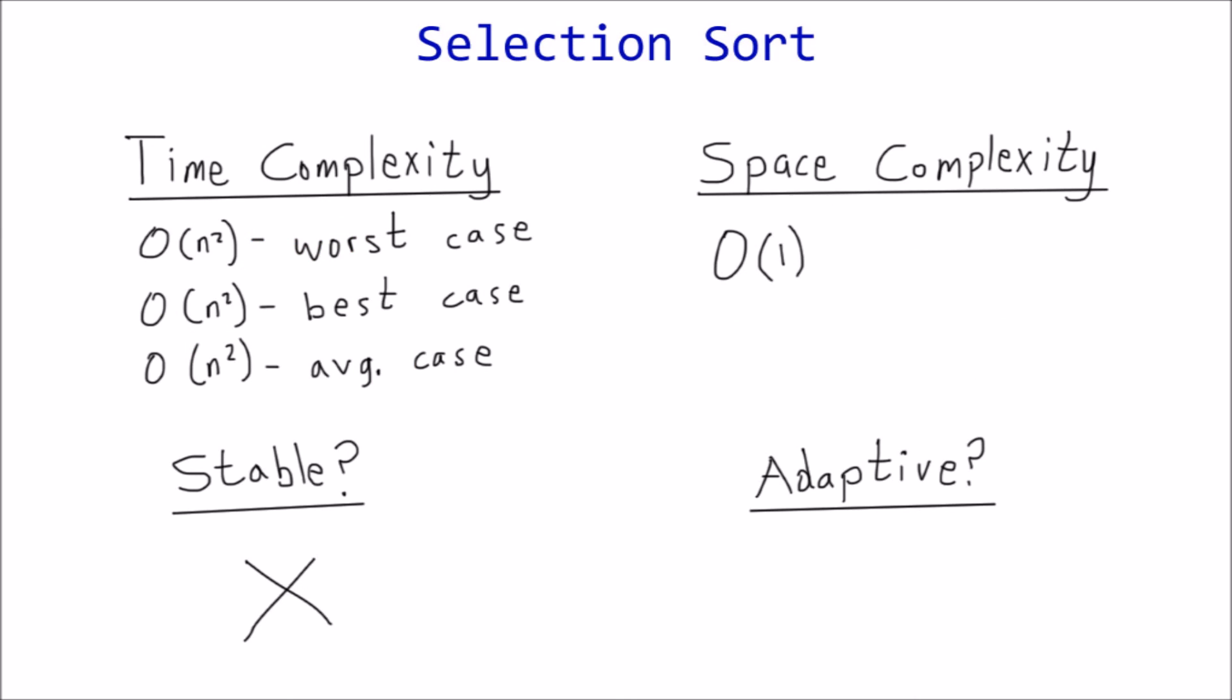Adaptability. A sorting algorithm is adaptive if it can take advantage of the initial order, improving performance the more the list is already sorted. Selection sort is not an adaptive algorithm because it makes a fixed number of comparisons based on n, regardless of whether the list is initially sorted or not. No early exit condition.